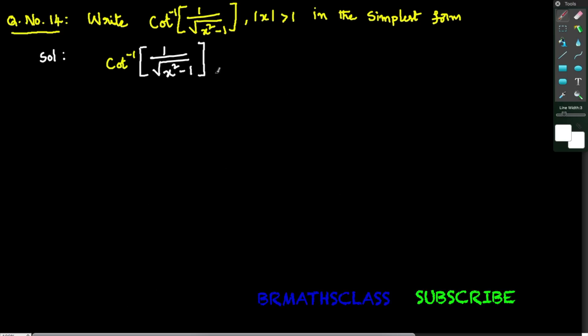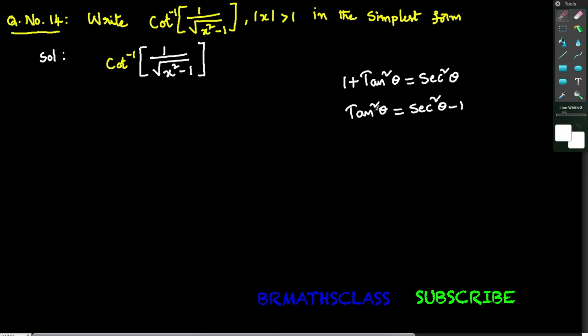I'll write those formulas here. We know that from trigonometric identities, 1 plus tan squared theta equals secant squared theta. From this, tan squared theta equals secant squared theta minus 1.